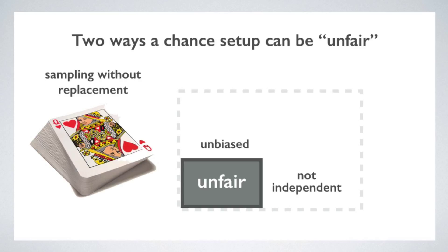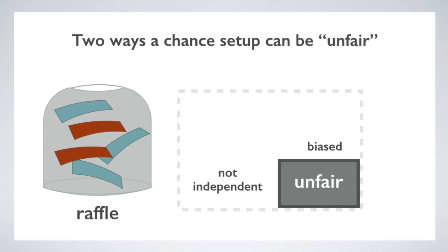Well, it's not going to be 1 in 4 anymore. It's going to be a little bit less, since I've lost one of the hearts. So the outcomes are not independent. As you keep drawing cards, the probability of any remaining card showing up on the next draw changes. Now, if we're looking for an example of a setup that is both biased and not independent, you could combine sampling without replacement with a biased set of outcomes. For example, you could have a raffle where you draw names on slips of paper from a jar. If you draw names but don't replace them, the outcomes are not independent. And if three of the slips have the name Jane and only two have the name John, then the outcomes are also biased in favor of Jane.